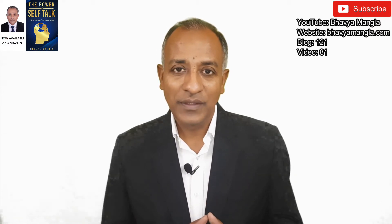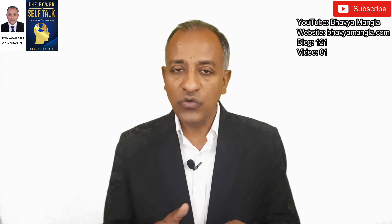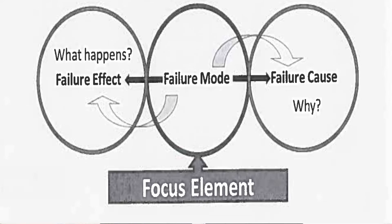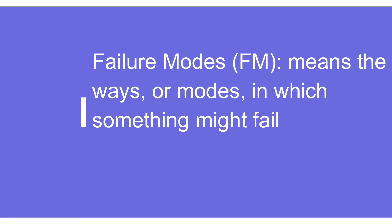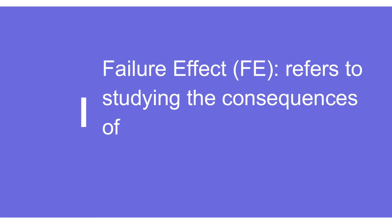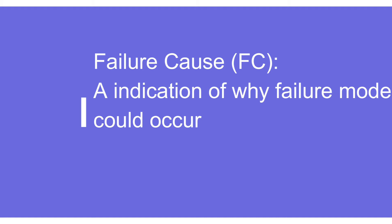When we talk about the failure chain, we are talking about failure mode, failure effect, and failure causes. The failure mode is in the center because its impact goes to both failure cause and failure effect. By definition, failure mode refers to the ways and modes by which something can go wrong. Failure effect refers to the consequences of those failure modes, and failure causes are the indications of why that failure could occur.